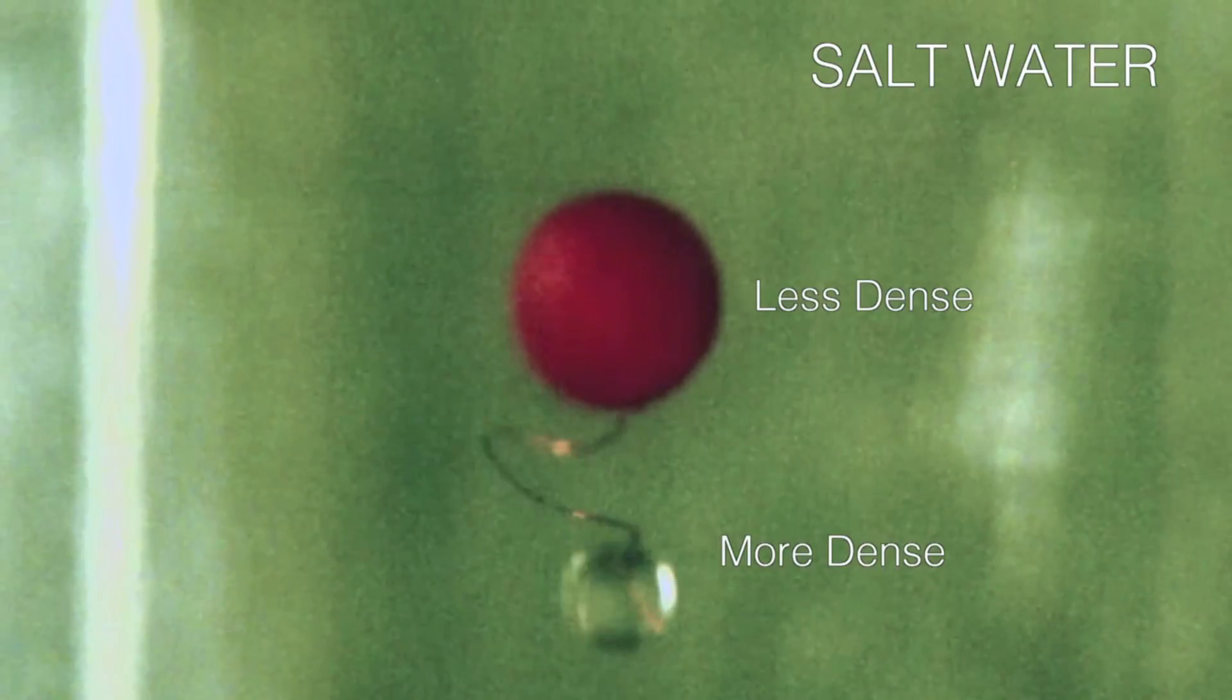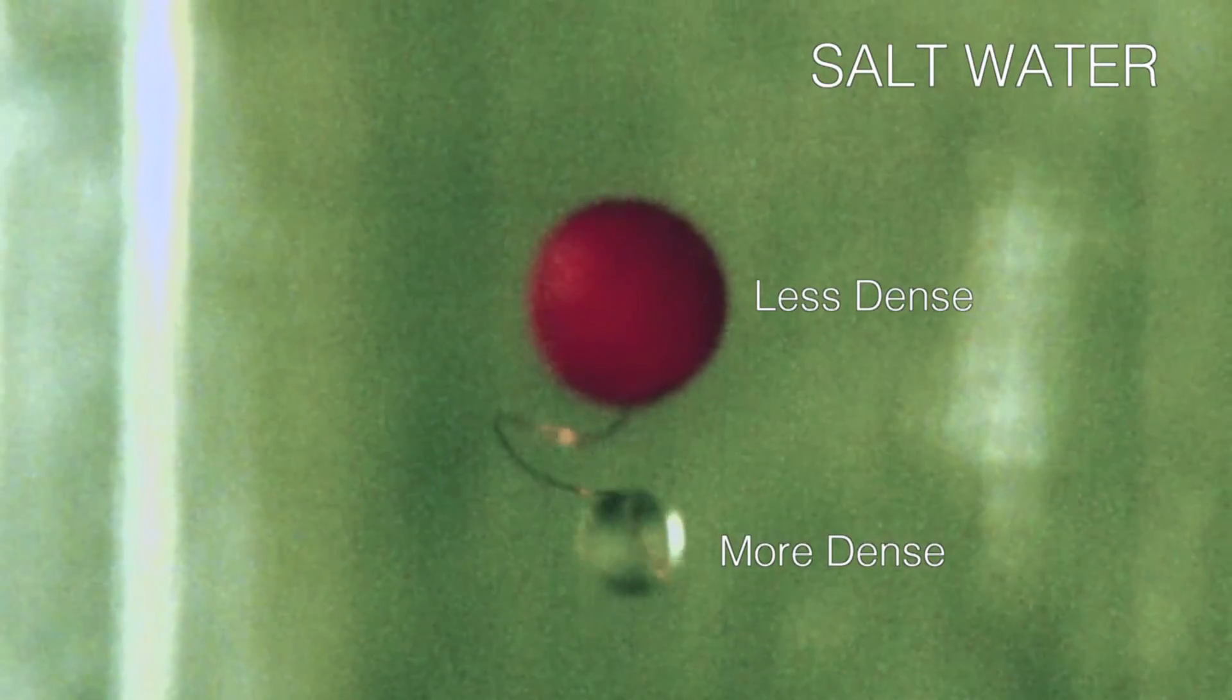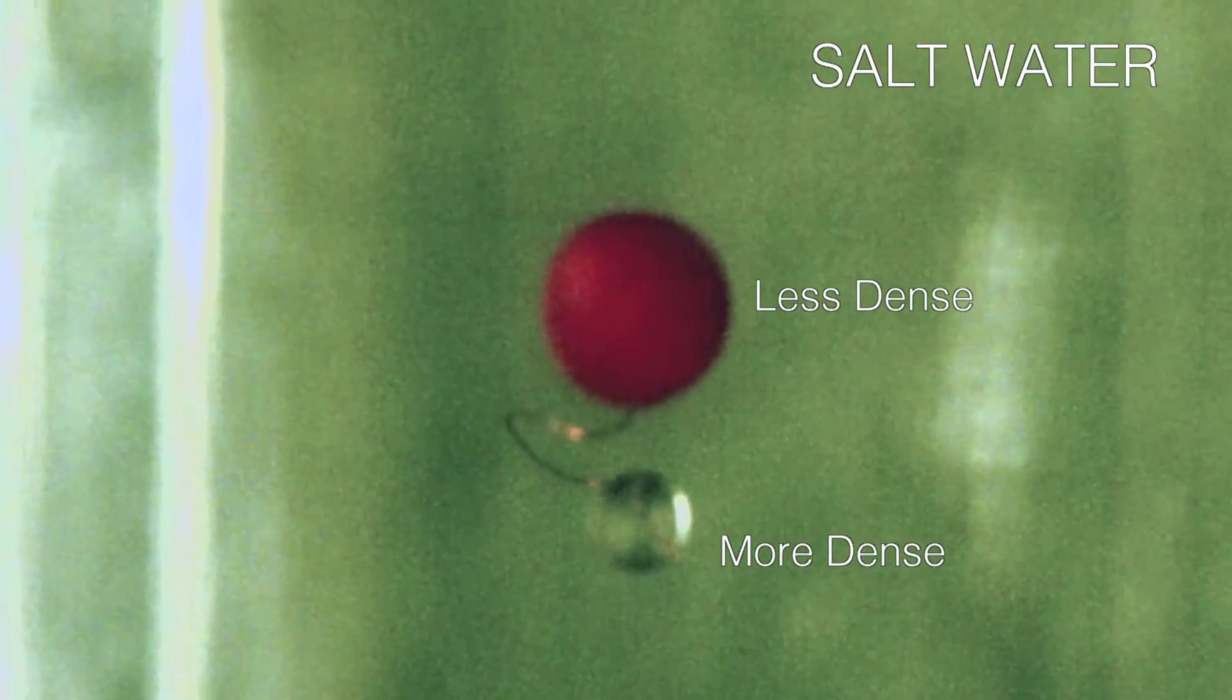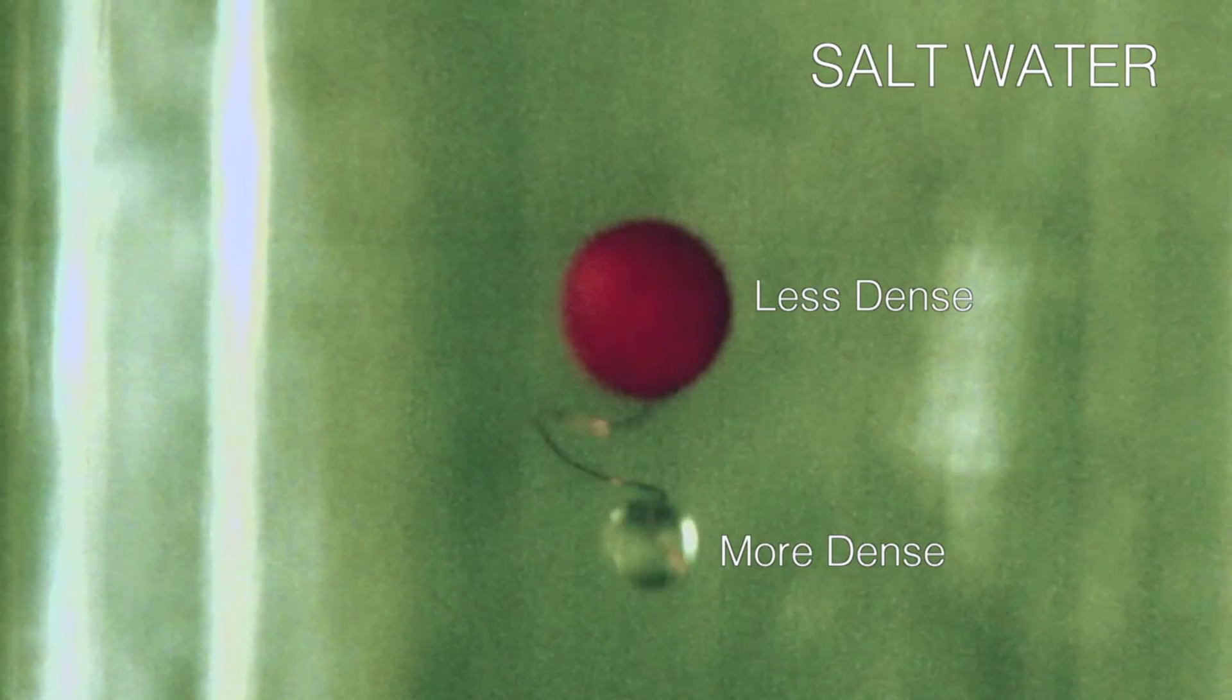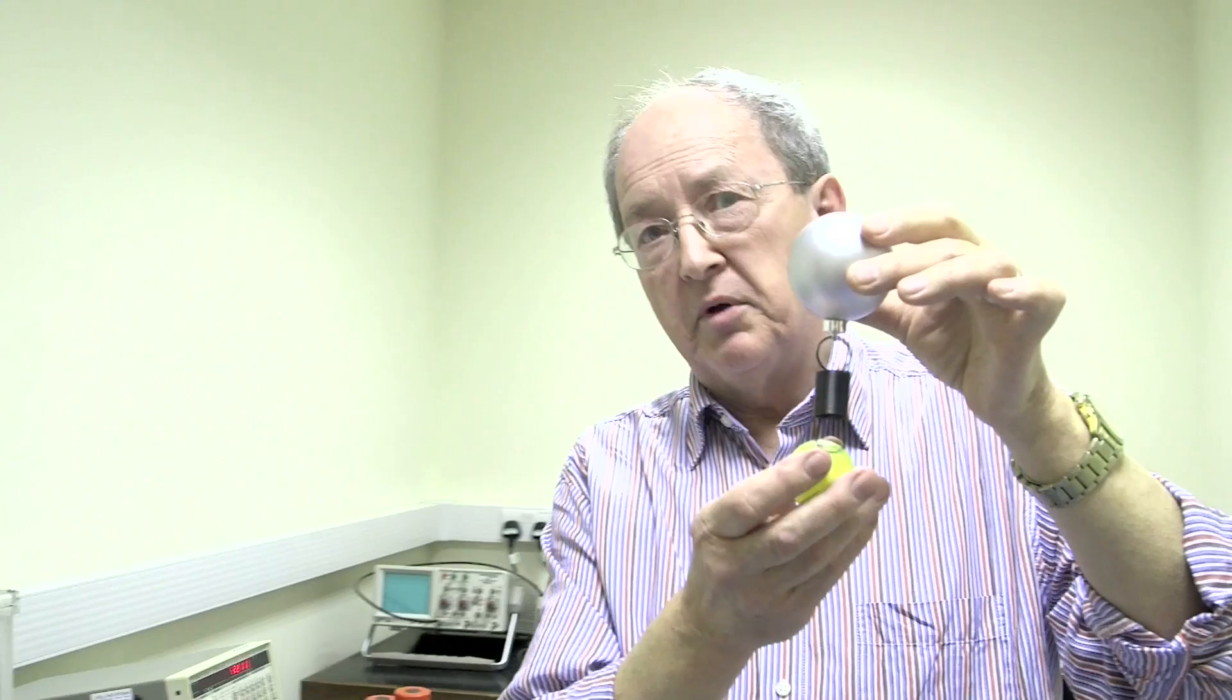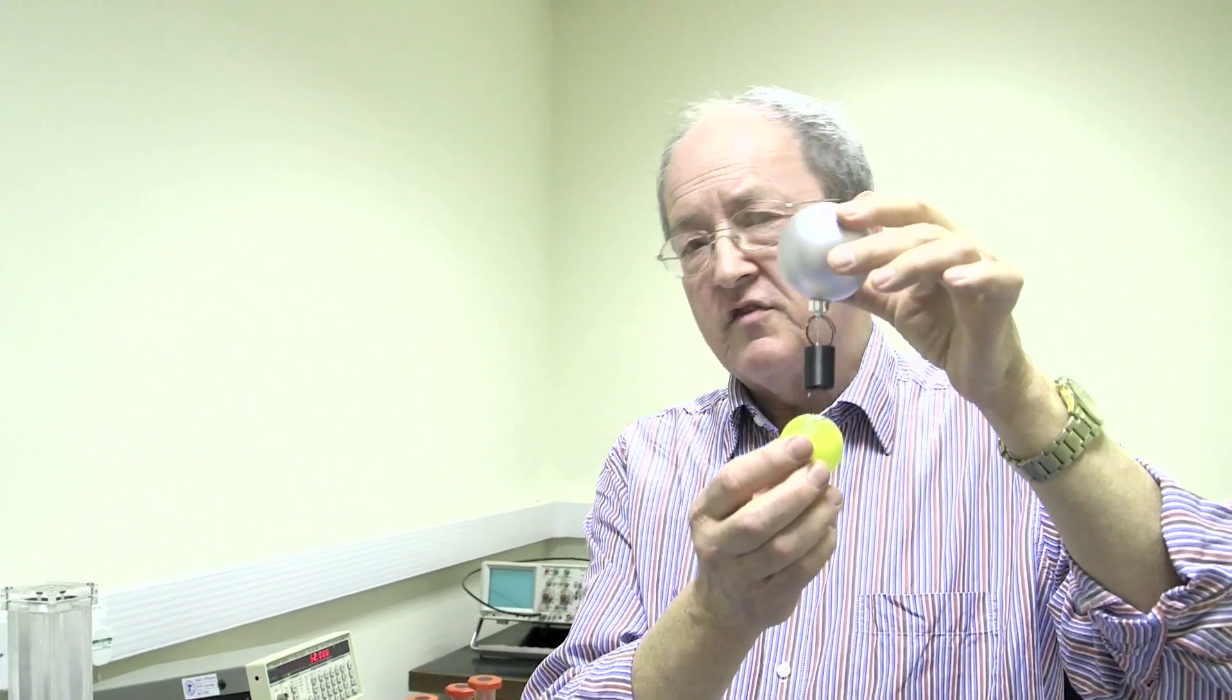The idea is that the lower sphere is denser, the glass, and the upper sphere is plastic. It's less dense. So these two spheres have different sizes, but the important thing is they have different densities.